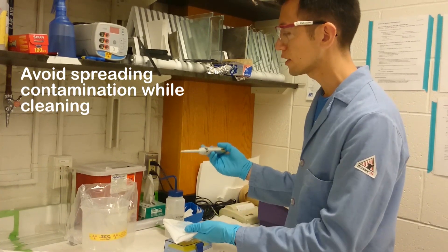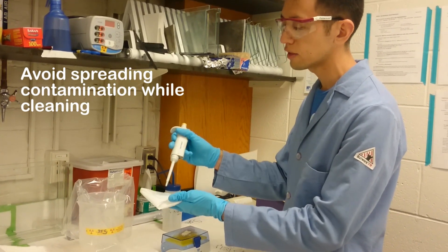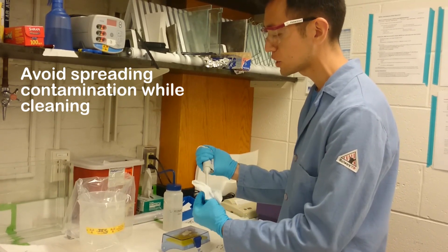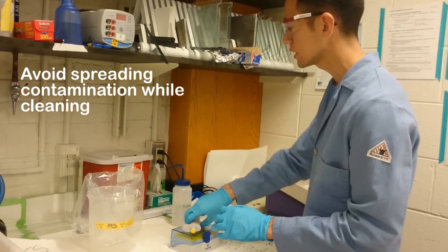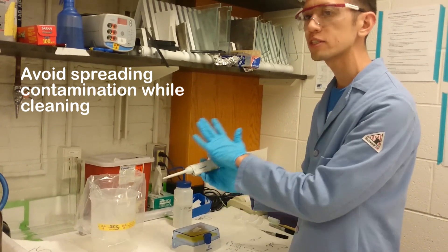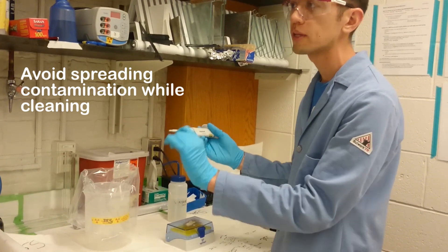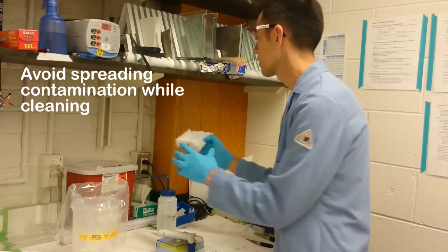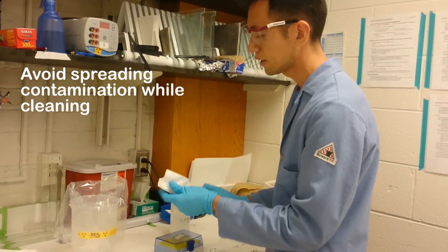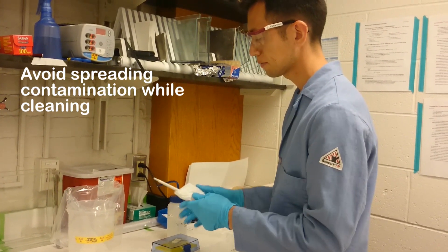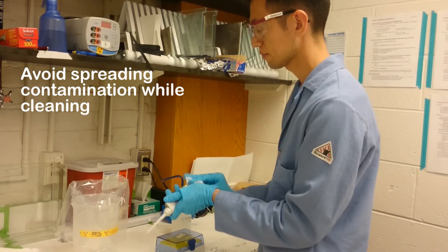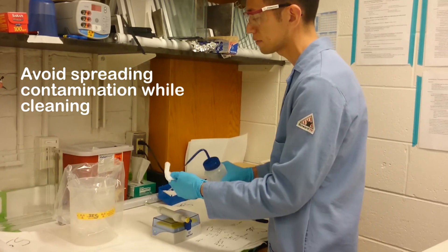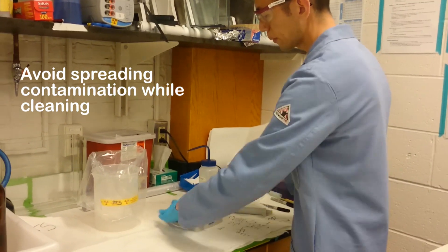You start by getting a Kim Wipe wet and you want to clean the business end of the pipettor first. Make sure that you change wipes because this is most likely to be contaminated and the rest of it should be less so. You don't want to clean this and then bring contamination to the rest of the pipettor. So I clean the front, I'll clean the body, and at the same time I'm also going to clean the pipette tip box.